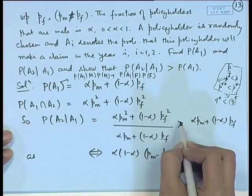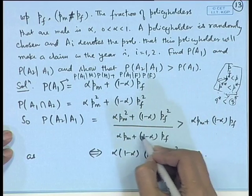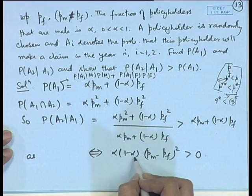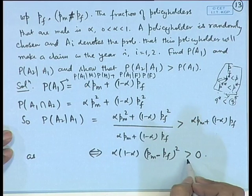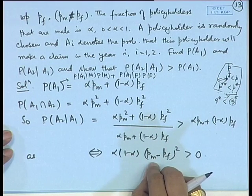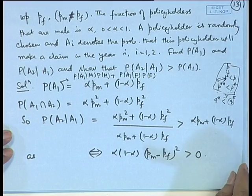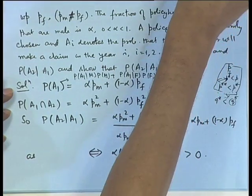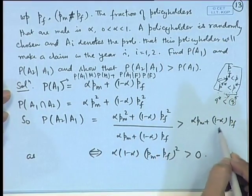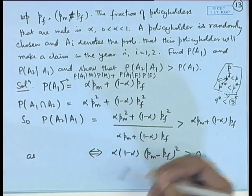This conditional probability is greater than P(A1). The difference P(A2|A1) − P(A1) reduces to alpha·(1−alpha)·(P_m − P_f)². Unless P_m = P_f, this term is strictly greater than 0. In the unlikely case where P_m = P_f, the two probabilities are equal — meaning it makes no difference which group the person belongs to, and both have the same claim probability. Otherwise, if a claim is found, the person is more accident-prone, giving a higher probability of a claim next year.